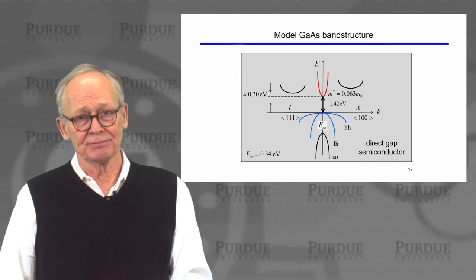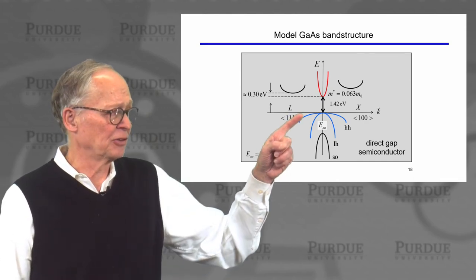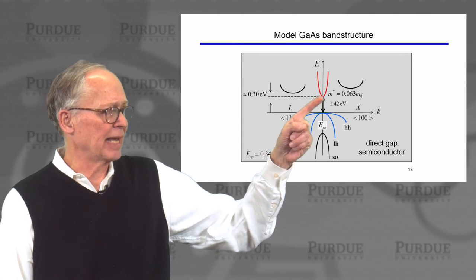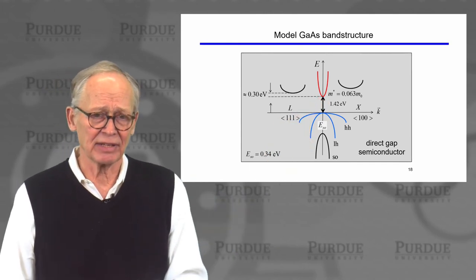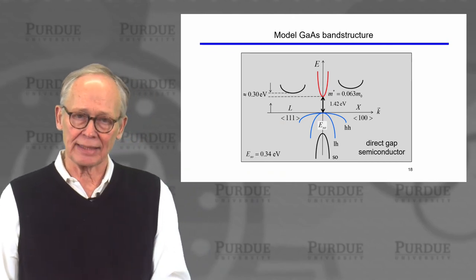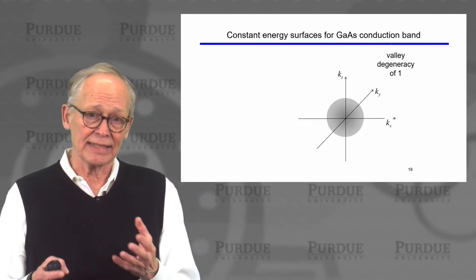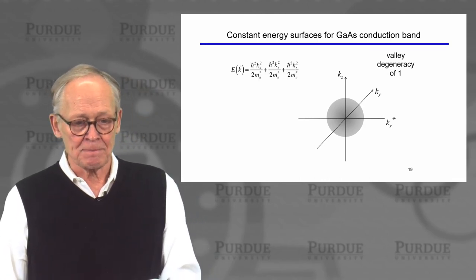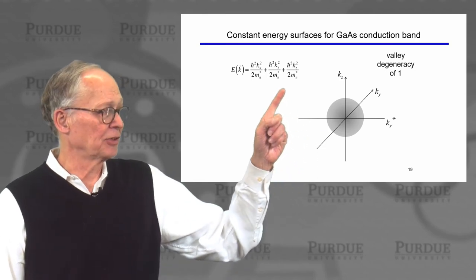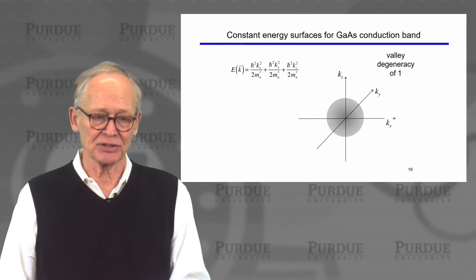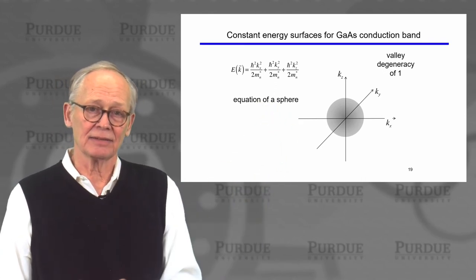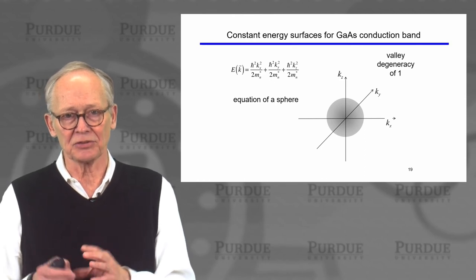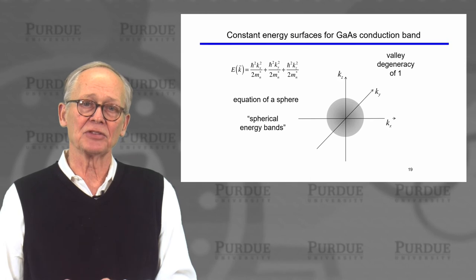For gallium arsenide, the model band structure has a similar valence band, but the conduction band is different: the valley at k = 0 is the lowest one, giving a very light effective mass compared to silicon. This is a direct gap semiconductor. In a direct gap semiconductor like gallium arsenide, the constant energy surface is a sphere — the effective mass is the same in all three directions. An electron with constant kinetic energy in gallium arsenide sits on a sphere in k-space. We refer to these as spherical energy bands, and in gallium arsenide and many direct gap semiconductors, the effective mass is quite light.